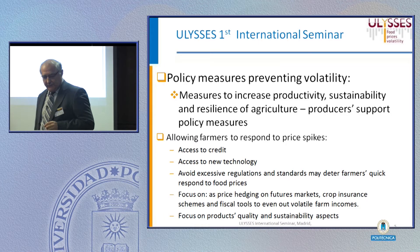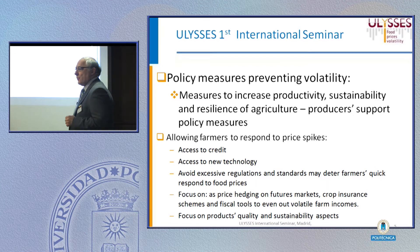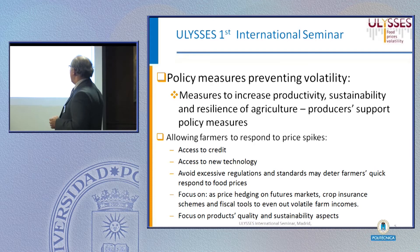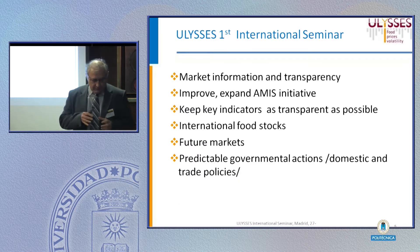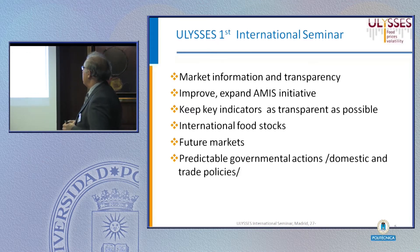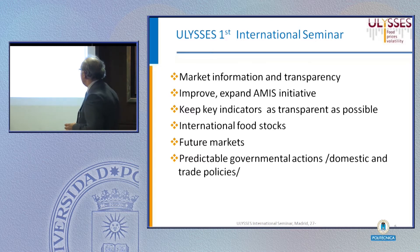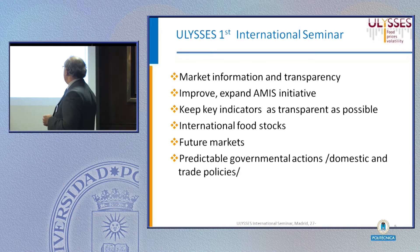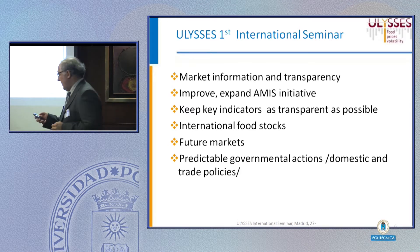The most important measures of the first group include: first, measures to increase productivity, sustainability and resilience of agriculture — measures which support supply policy. I will stress especially measures which allow farmers to respond to price spikes: improving their access to credit, access to new technology, avoiding excessive regulation and standards, and focusing on product quality and sustainability. Another set of first-group measures deals with market information and transparency, including expanding the AMIS initiative and keeping indicators as transparent as possible, as well as dealing with futures markets and predictable governmental action in domestic and trade policies.